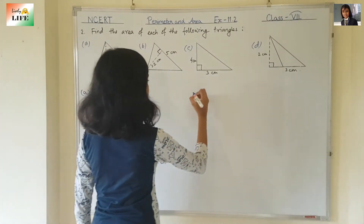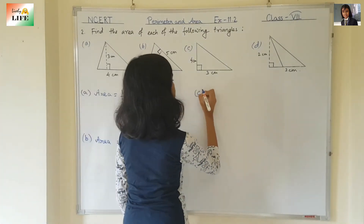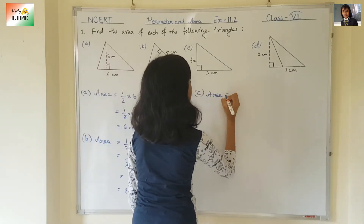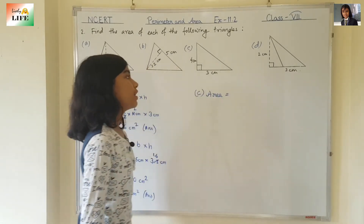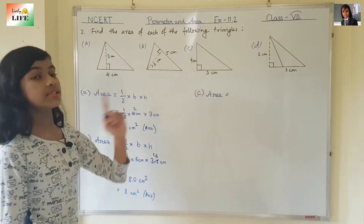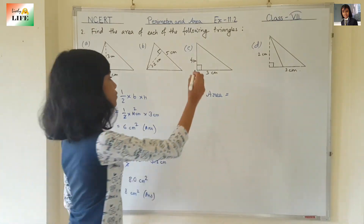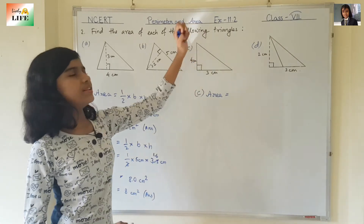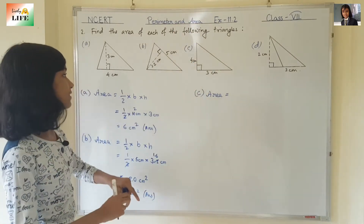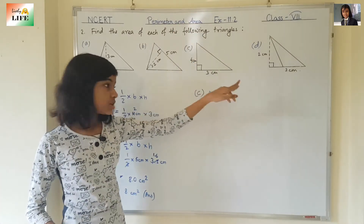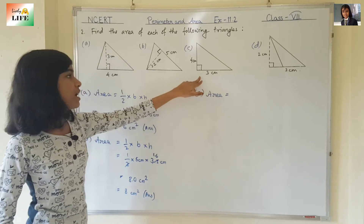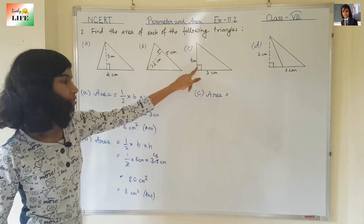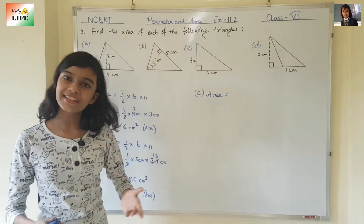Now let's move to the third one. Area. Now see over here — this is the right angle triangle, meaning there is one right angle. So this is the height. In a right angle triangle, this is the base, three centimetres, and perpendicular to the base is the height. This is perpendicular to the base, this is the right angle, so this is the height.